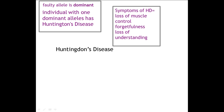Some of the symptoms of Huntington's disease: because it is a disease which affects the brain, it is related to things like loss of muscle control, forgetfulness, and loss of understanding. Something else with Huntington's disease is that it is usually later onset, so you do not start to notice the symptoms of the disease until you reach roughly around 30 years old — in some cases sooner and some cases later. But generally speaking, Huntington's disease tends to be late onset.